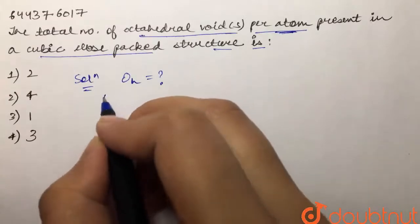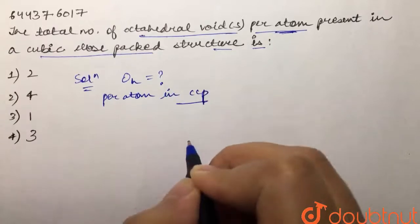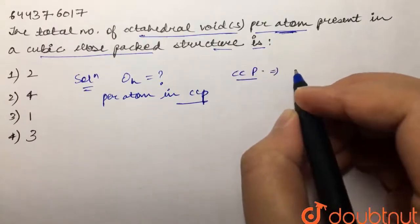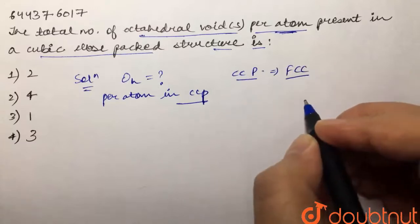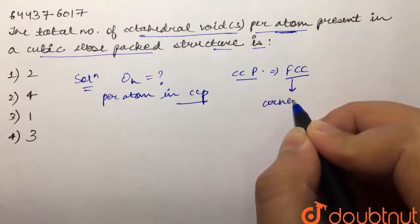Now CCP is what? CCP is nothing but FCC, which is face-centered cubic. In this case, we know atoms are present at corners plus the face centers.